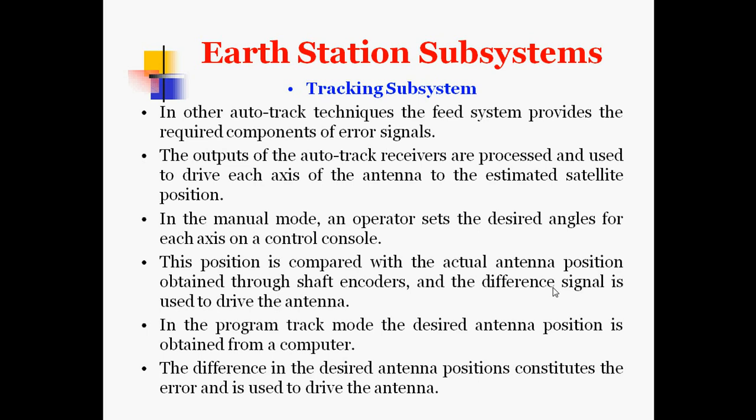The antenna control system can also be driven in manual mode, where an operator sets the desired angle for each axis at a control console. This position is compared with the actual antenna position obtained through shaft encoders, and the difference signal is used to drive the antenna. In program track mode, the desired antenna position is obtained from a computer, and the difference between desired and actual position constitutes the error used to drive the antenna.